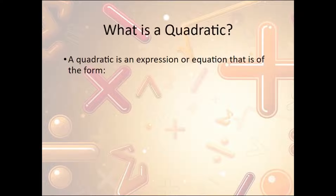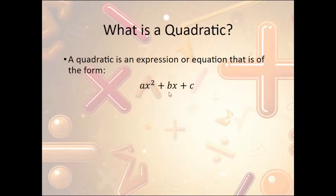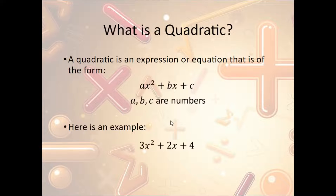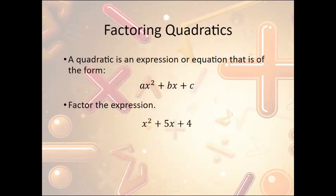Now what is a quadratic? A quadratic is an expression or equation of the form ax squared plus bx plus c. Notice the squared term: we have an x squared, then some other x term, then some constant. a, b, and c are all numbers — not variables. So an example would be 3x squared plus 2x plus 4.